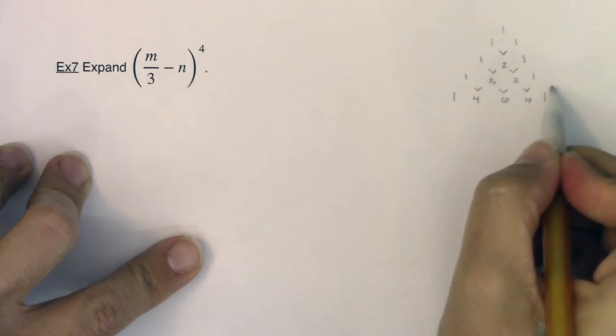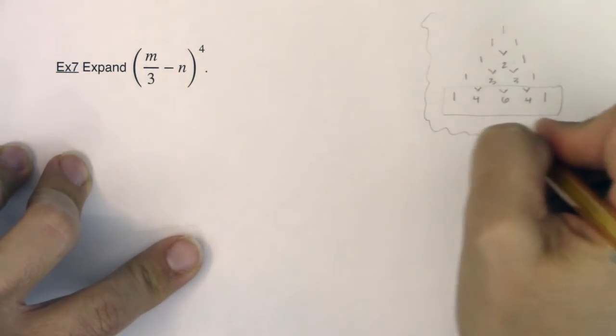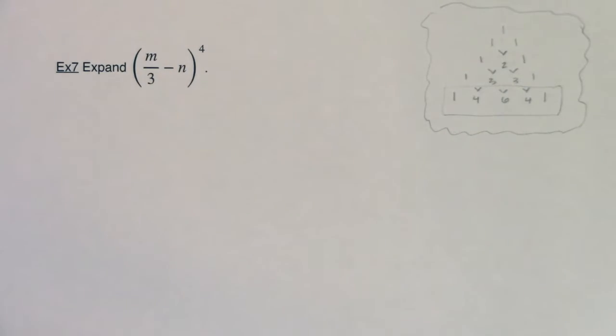All right, there are my coefficients. 1, 4, 6, 4, 1. Now let me put this off in a little bubble. And you'll get to the point where you have the first few levels of this memorized because they pop up so often.